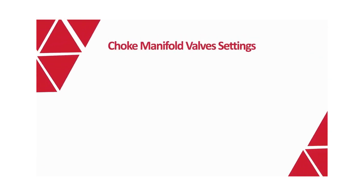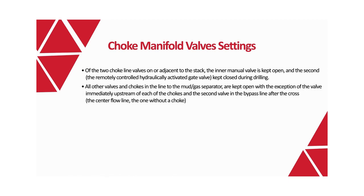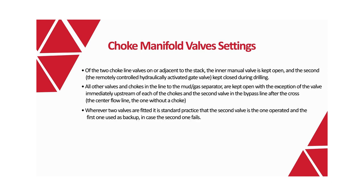Choke manifold valve settings. Of the two choke line valves on or adjacent to the stack, the inner manual valve is kept open and the second — the remotely controlled hydraulically activated gate valve — is kept closed during drilling. All other valves and chokes in the line to the mud or gas separator are kept open, with the exception of the valve immediately upstream of each choke, the second valve in the bypass line after the cross, and the center flow line without a choke. Where two valves are fitted, standard practice is that the second valve is the one operated and the first used as backup in case the second fails.